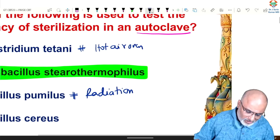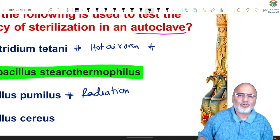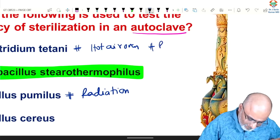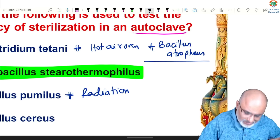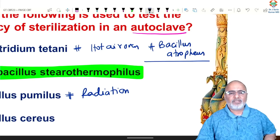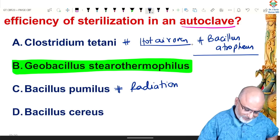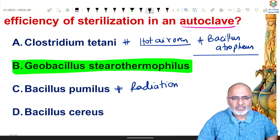Non-toxigenic spores of Clostridium tetani may be useful for hot oven sterilization. But commonly for hot oven we use Bacillus atrophaeus as the quality control agent, though non-toxigenic spores of Clostridium tetani can also be used.